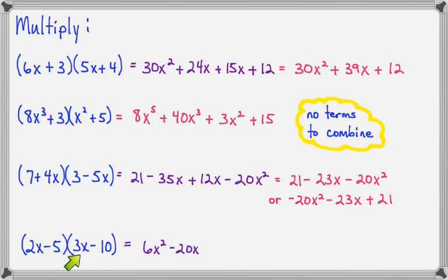Inner times inner is minus 5 times 3X, so that's minus 15X. And last times last is negative 5 times negative 10, so that's plus 50. Our two middle terms can be combined, so negative 20X and negative 15X make negative 35X.